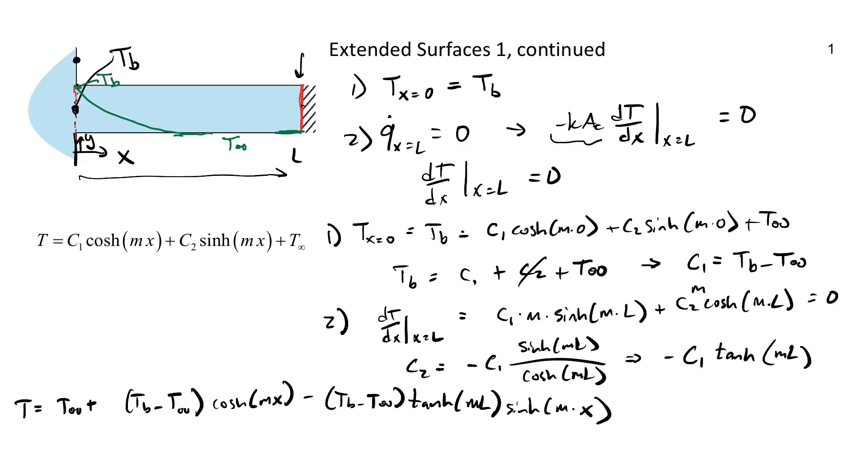M, so M is our fin constant. M we defined that earlier for this particular situation as, perimeter times H bar over K AC, square root of that. That came out of the specific geometry we have here. So M is not always the same thing. M changes depending on the geometry that you have, the resistance to the surroundings that you have. So that's what it was for this case.